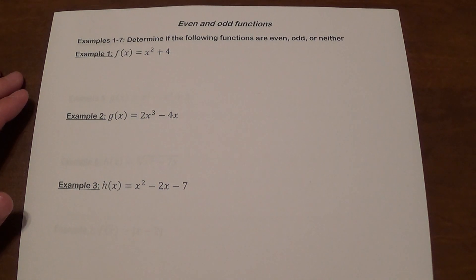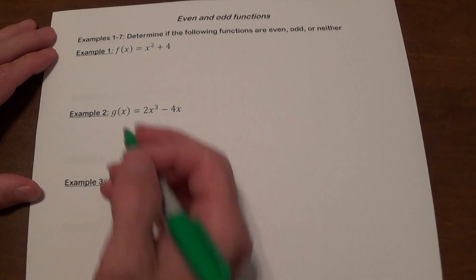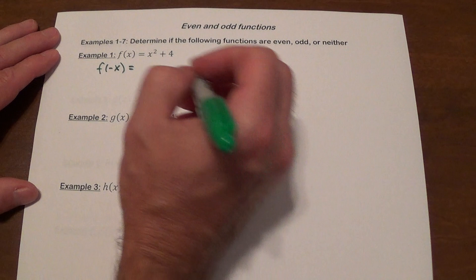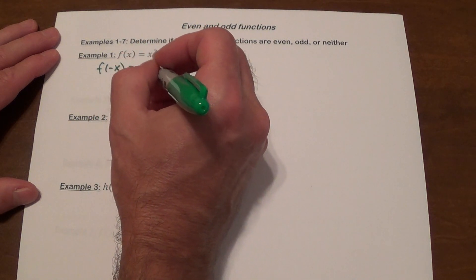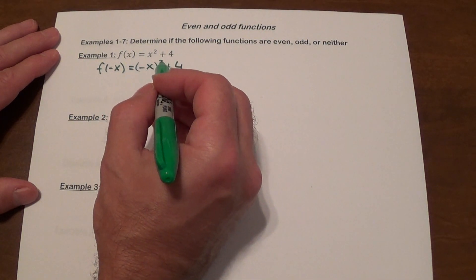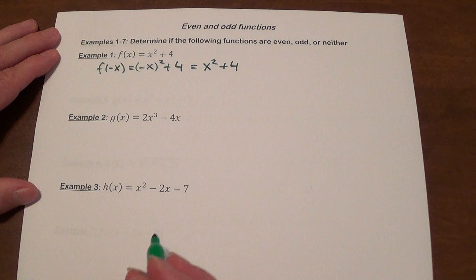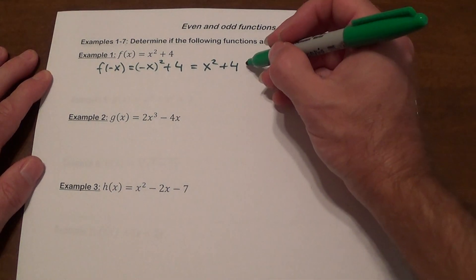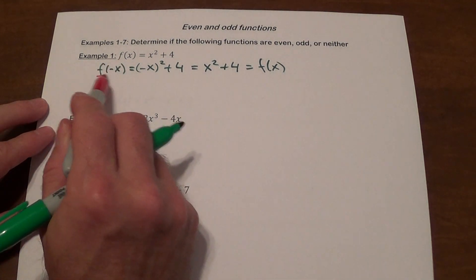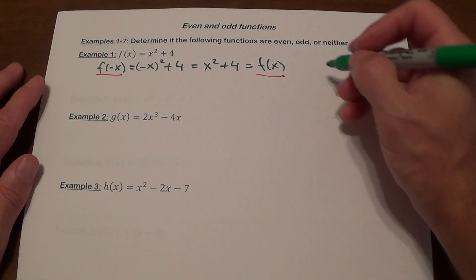The first thing we're going to do is determine if the function is even, odd, or neither. You are always going to set up f of negative x and see what comes out. If we do f of negative x, x is replaced with negative x. Because negative x squared produces x squared, the negative disappears, plus 4 — this is our original function. That means f of negative x equals f of x, which is what we want to see in an even function. This function is even.